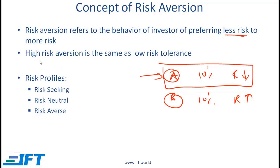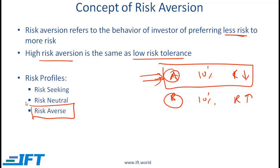When we say high risk aversion, this is the same as saying low risk tolerance. A normal investor is risk averse, but there can be other profiles. A risk neutral investor doesn't care about risk — investment A and B would be the same to them. A risk seeking investor actually prefers more risk to less risk, all else equal.